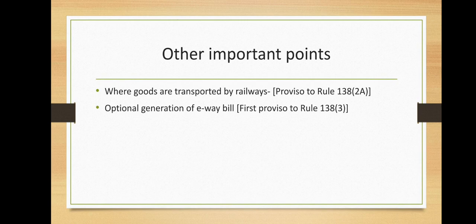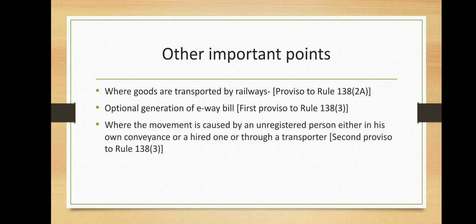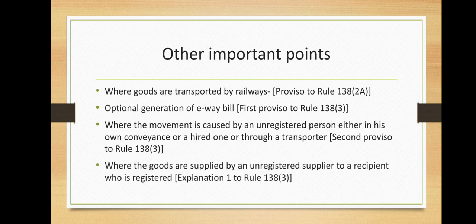Optional generation of e-way bill: the registered person or the transporter may, at his option, generate and carry the e-way bill even if the value of the consignment does not exceed Rs. 50,000, as per the first Proviso to Rule 138 clause 3. Where the movement is caused by an unregistered person either in his own conveyance or a hired one or through a transporter, he or the transporter may, at their option, generate the e-way bill as per the second Proviso to Rule 138 clause 3. Where the goods are supplied by an unregistered supplier to a recipient who is registered, the movement shall be said to be caused by such a recipient if the recipient is known at the time of commencement of the movement of goods. This is Explanation 1 to Rule 138 clause 3.